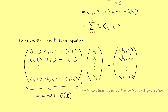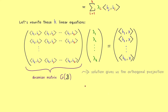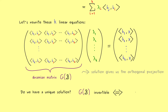Inside the Gramian matrix we only find the basis vectors in the inner product. So in the moment you have a basis, you can always calculate such a Gramian matrix. This is the object that helps us find the orthogonal projection. You can already check that for k equal to 1 we recover our one-dimensional case from before. But we also have to answer the question: do we have a unique solution in the general case as well? This simply means the matrix G(b) is invertible, and since we have a square matrix, this is equivalent to the kernel being trivial — meaning the kernel only contains the zero vector.